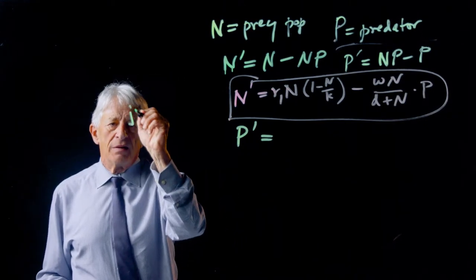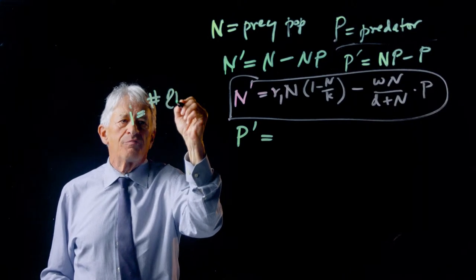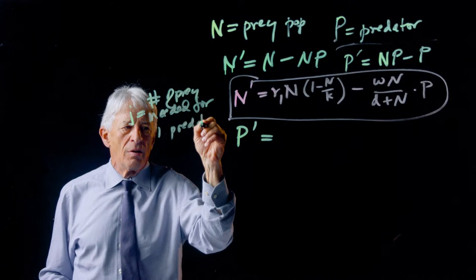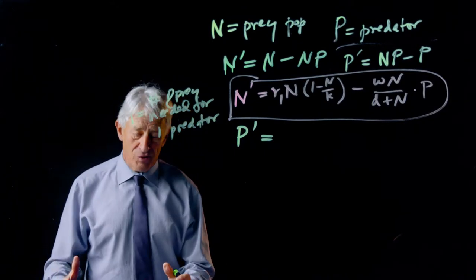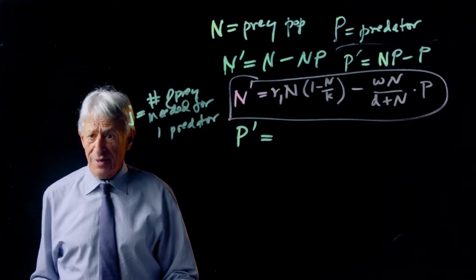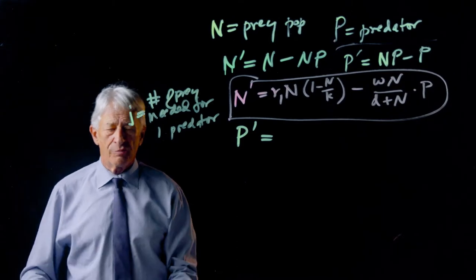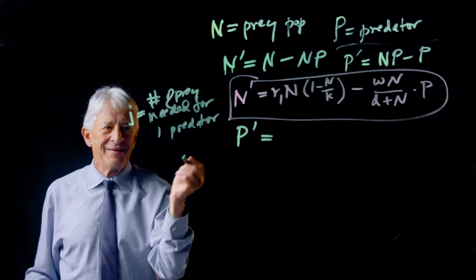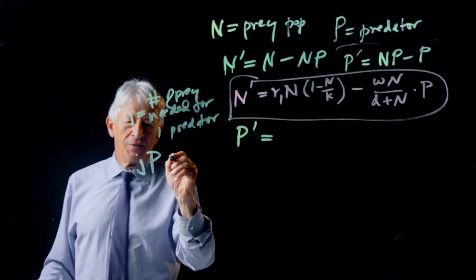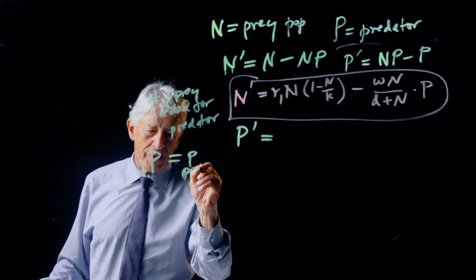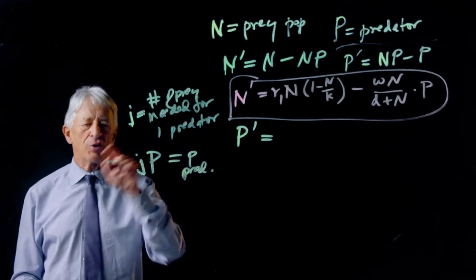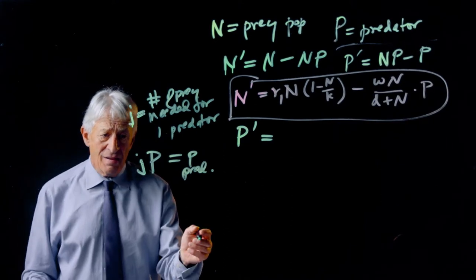So let's see how that works. Let's let j equal the number of prey needed for one predator. So j is a measure of the size of the prey relative to the predator. If j is very small, it means that one prey is a big meal. But if j is very large, you need many prey to support one predator. So if that's j, then it follows that j times P is the number of prey necessary to support P predators, which is what we have. And jP is therefore the amount of resource that we need to support the current predator population.